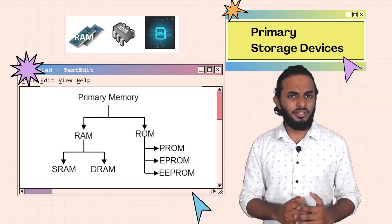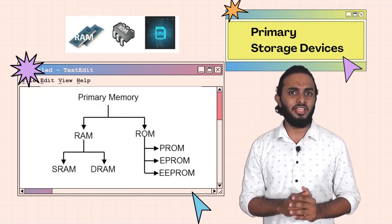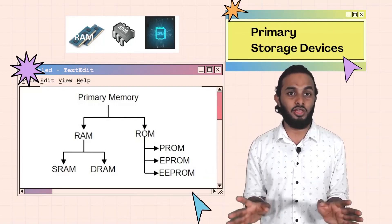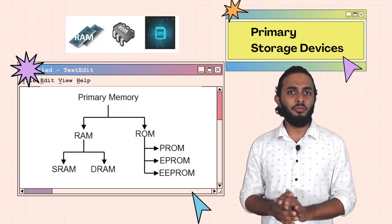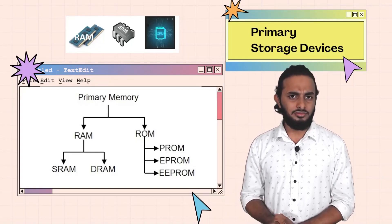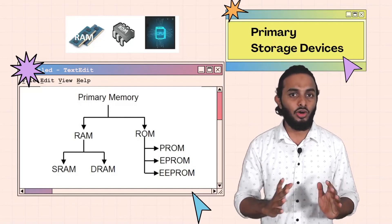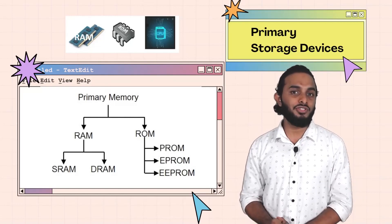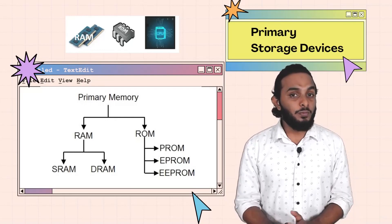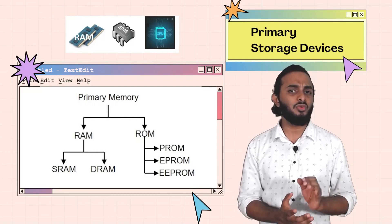ROM is read-only memory. When we open the system, we have a BIOS screen — Basic Input Output System. There are some letters in black color — that's the BIOS screen. The read-only memory is here; it can't be erased, it can't be changed — this is read-only. There are different types of ROMs: PROM (Programmable Read-Only Memory), EPROM (Erasable), and EEPROM (Electrically Erasable).